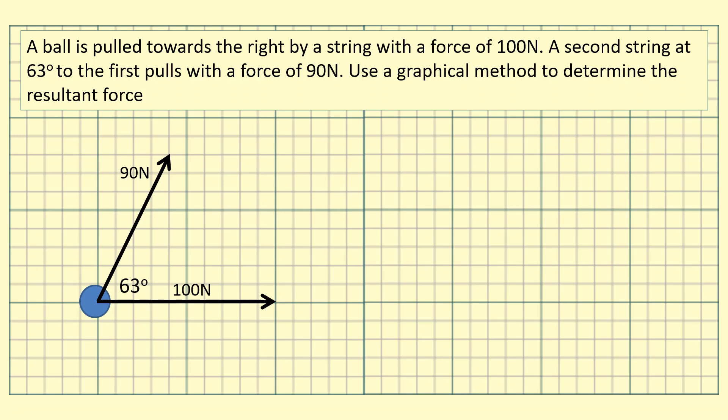In this question we have two forces: a 100 Newton force acting towards the right and a 90 Newton force acting towards the top right at 63 degrees from the 100 Newton force. Use a graphical method to find the resultant force, so this means by drawing and using a scale. First I'm going to show you how not to do this.